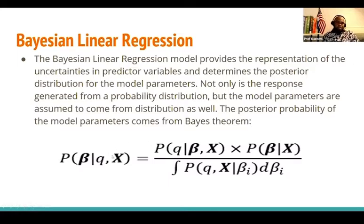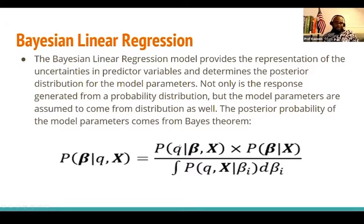The posterior is going to be equal to combining the likelihood with a prior, divided by the normalization — which I call the evidence. So in the linear regression setup, this is what we normally have: we consider the likelihood, which is the probability distribution for the response given the parameters and the predictors.